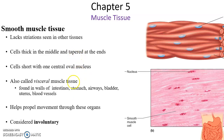Smooth muscle tissue is involuntary — we do not consciously have to think of them working. We do not think to ourselves, okay, upper part of the intestines, squeeze the food along. It does it on its own.